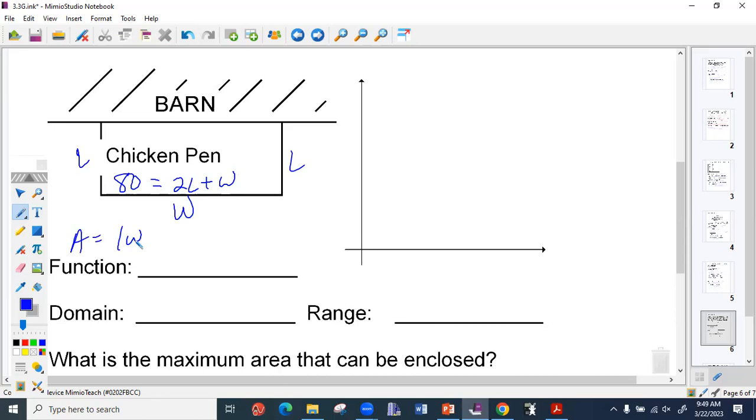The key thing here is to create one function. This is two separate functions happening, right? I need to make them come together. In order for them to come together, that means I have to substitute one in for the other. We can easily get W by itself.